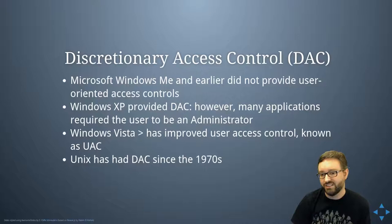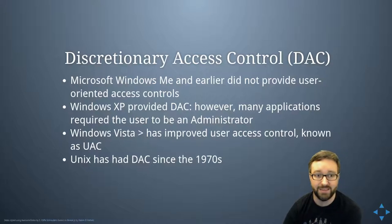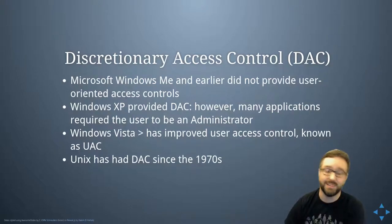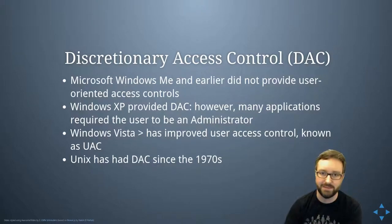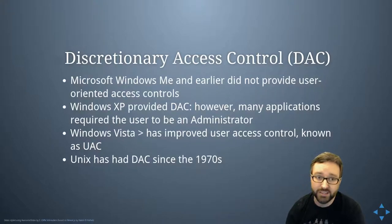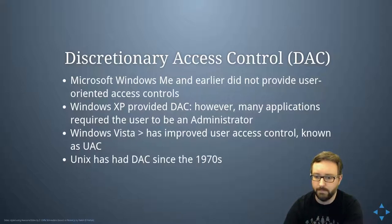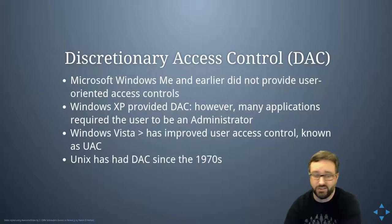UAC was a great idea in terms of security — much better than everyone running as administrator all the time — but it got criticized for usability because security was suddenly in everyone's face. Since then they've tried to improve the UI experience, but it was a step forward in security. Meanwhile, Unix, including the earliest versions of Linux, has had discretionary access control since the start — since the 1970s when it was first released.